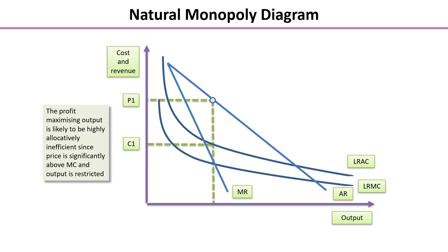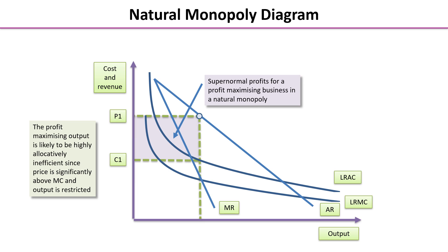Now we add the revenue curves — average revenue, downward sloping, and marginal revenue. The profit-maximising output is likely to be highly allocatively inefficient because price is significantly above marginal cost and output is restricted. Matching long-run marginal cost with marginal revenue gives us price P1 compared to cost C1. We can clearly see the supernormal profit for this natural monopoly.